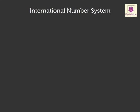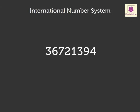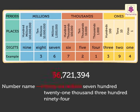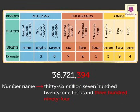Now let us learn to read and write numbers using the international number system. Remember, commas are inserted from the right after every three digits. Look at the example on the board. We write it as 36,721,394. The number is read as thirty-six million seven hundred twenty-one thousand three hundred ninety-four.